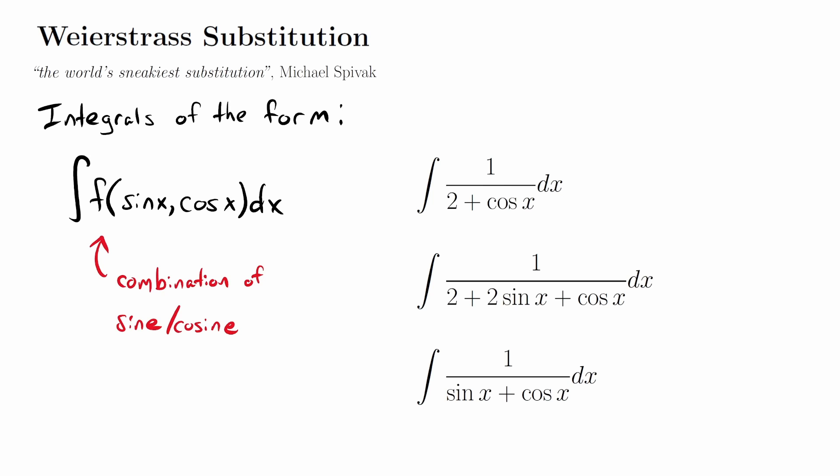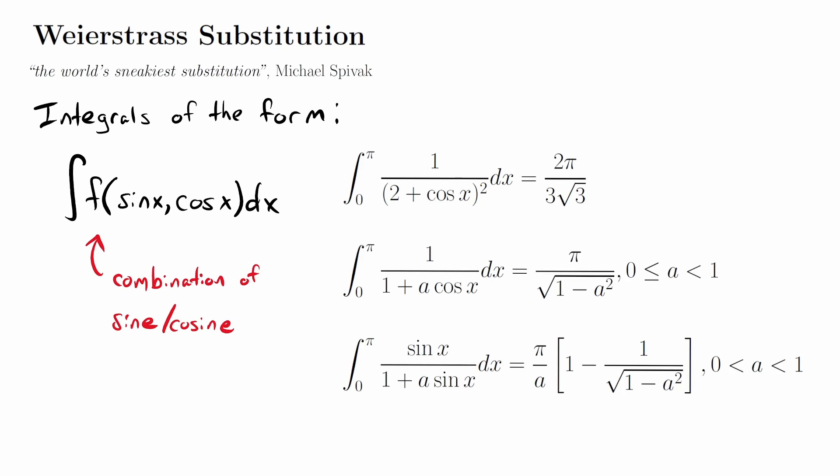Now this method is for integrals of the following form: combinations of sine and cosine, just to first powers, and we have some examples over to the right. These are going to be the simple ones that we'll apply Weierstrass substitution to. We're going to evaluate the first one in this video, and the others we'll get to later. Here are some of the more challenging integrals that we can also apply Weierstrass substitution to, and we'll get to these in future videos in the Art of Integration.